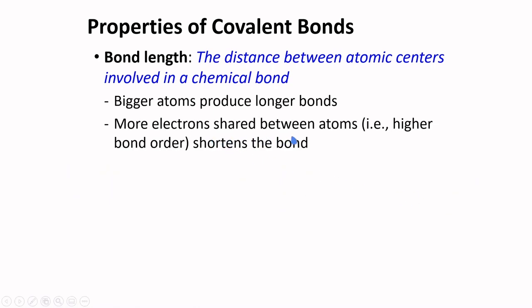More electrons shared between atoms, that is, higher bond order, shortens the bonds. Single bond is much longer if we will compare it to double bond and triple bond is very short, that is, if we compare the same pairs of atoms.